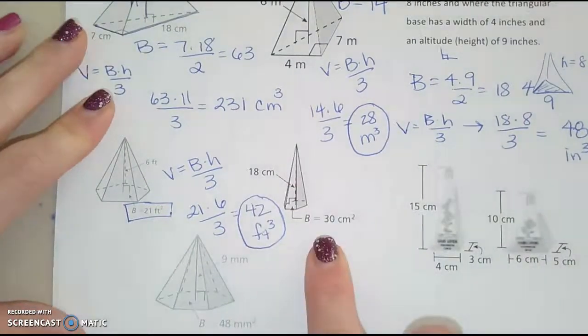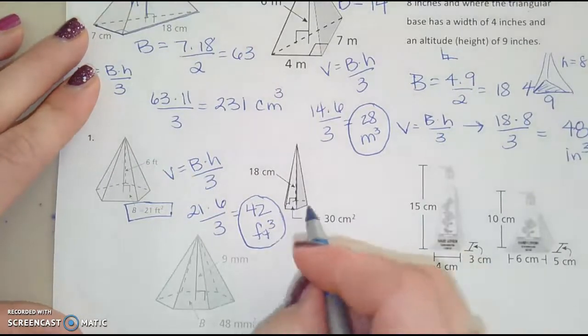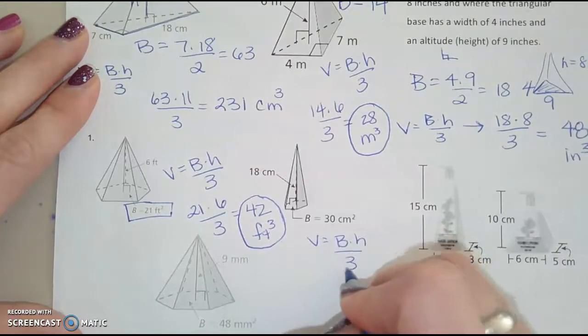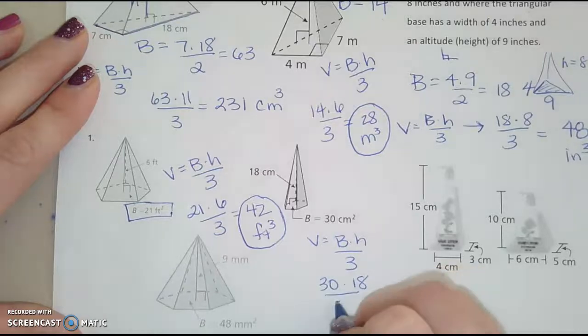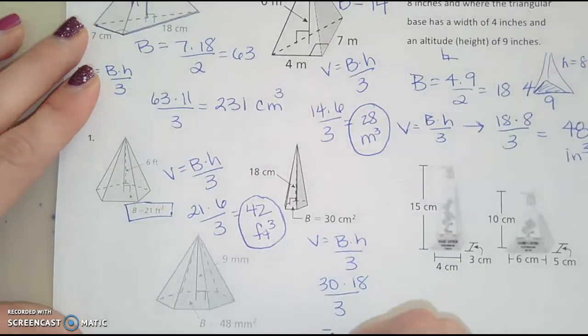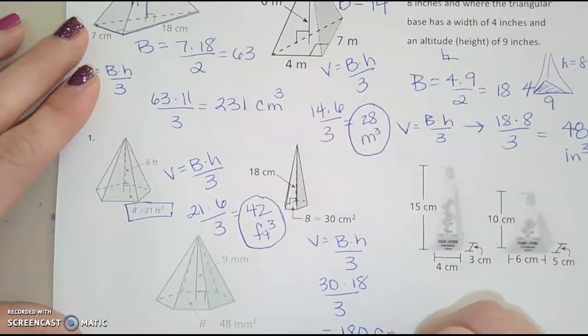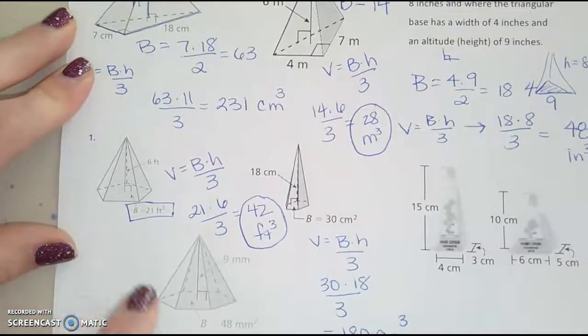I'll do one more. I'll do this one here. However, this is, again, I can't really tell, maybe a pentagon, but all I need to do is capital B times H divided by 3. So 30 times 18 divided by 3, and I get an answer of 180, and it looks like cubic centimeters. Alright, so pause, and you do this one over here.